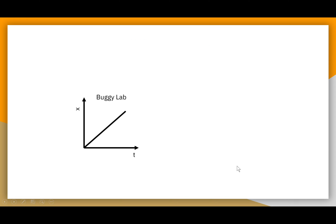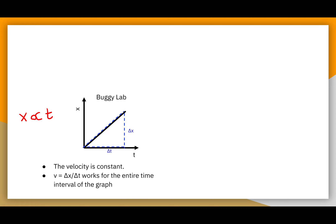Last time we saw a position versus time graph was in our buggy lab. In the buggy lab, position was directly proportional to time — as time increased, position increased proportionally. We were able to take a point at the very beginning and the very end of our range, find the change in position and change in time, and use that to determine velocity. Because the slope was constant, the velocity was constant, and the equation v equals delta x over delta t worked for that entire time interval.